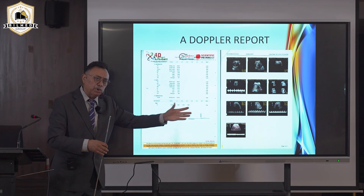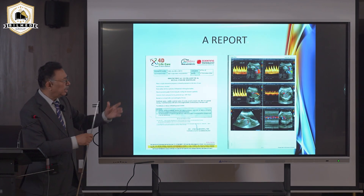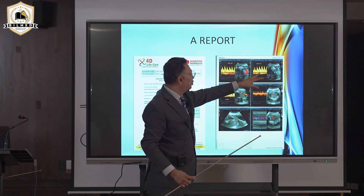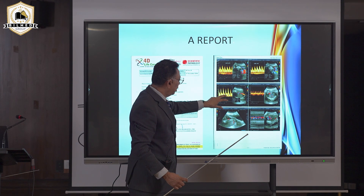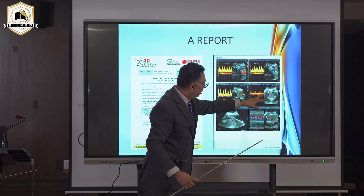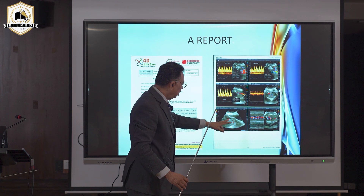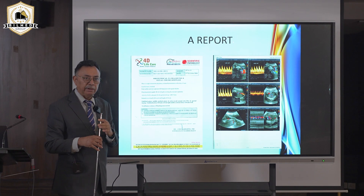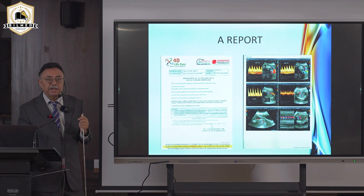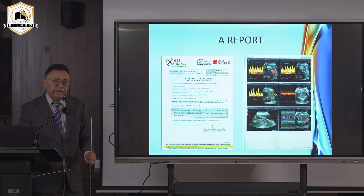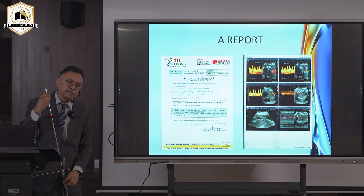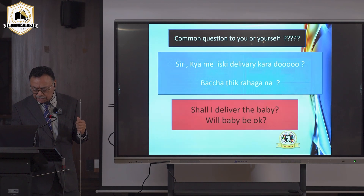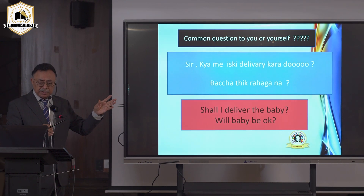What do we do? We ring up the radiologist and ask whether to do a cesarean — but why would the radiologist advise? They are not managing the patient; you are. You must understand the report, the waves, and what diastole and systole mean. If the umbilical artery shows good diastole at 50%, the aorta at 30%, and the umbilical vein is non-pulsatile — these are all reassuring signs visible in the waveforms.